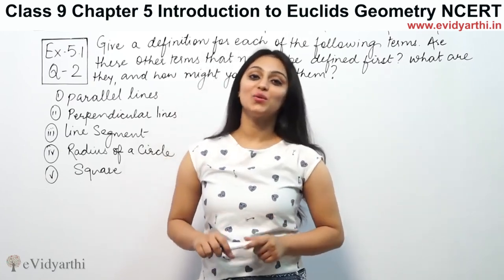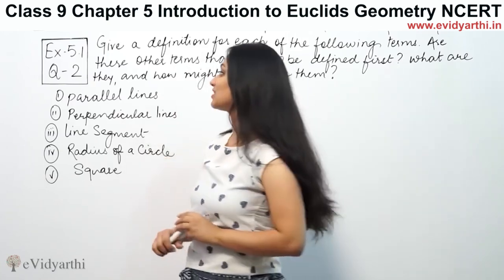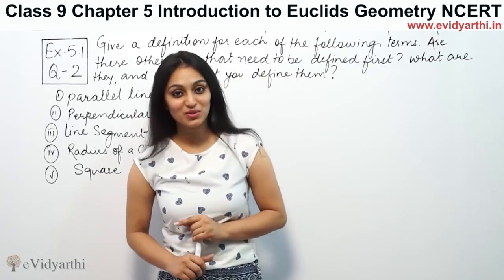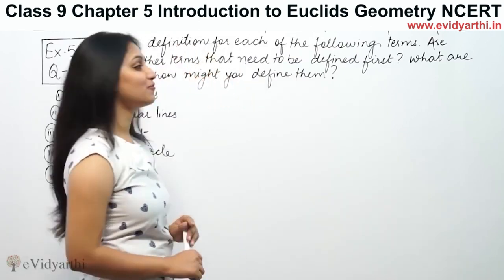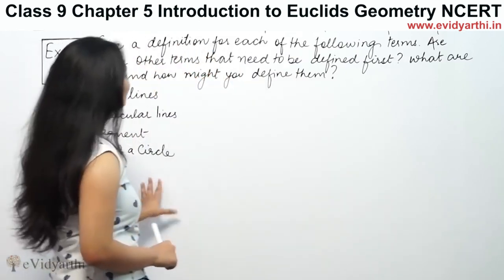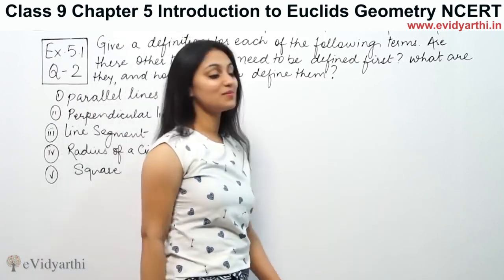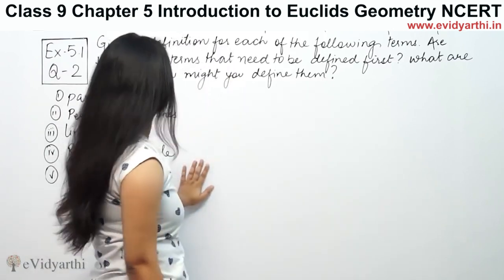Hi, this is Khujpoor with another question of Euclid's geometry. This is question number 2 from exercise 5.1, page number 85 from NCERT. This says: give a definition for each of the following terms. We have to define these terms.